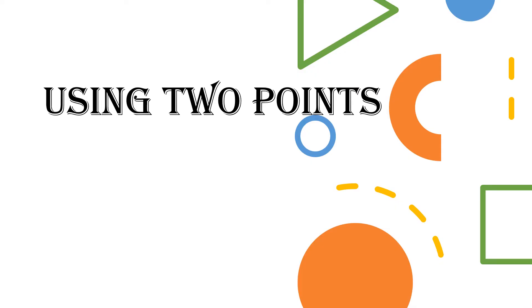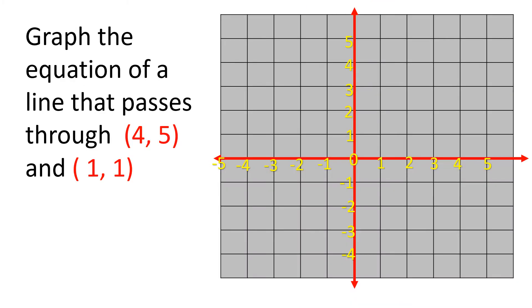First is using two points. If the given are two points, you just simply plot the points of the given equation. Example number one: graph the equation of a line that passes through points (4, 5) and (1, 1). Given the two points, just plot each point.